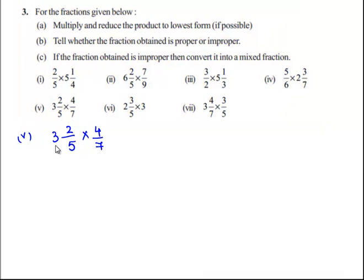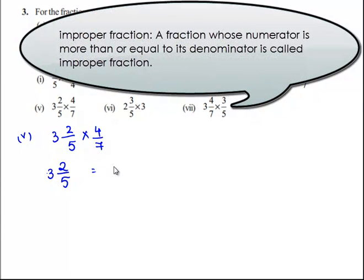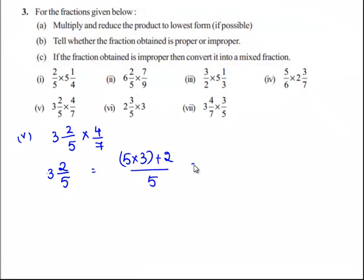Here we observe that 3 2/5 is a mixed fraction. So first we need to convert this into its improper form. 3 2/5 can be written as (5 times 3 plus 2) divided by 5, which is equal to 15 plus 2, that is 17/5.